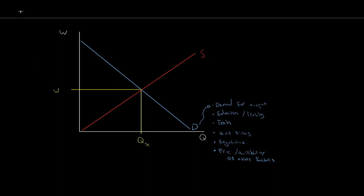That's it for demand — let's take a look at our supply. From the supply side, this is you and I. The first factor we can look at is the number of workers. If you're in a large city with lots of workers, that's a lot of supply — supply shifting to the right. You're in a smaller area with fewer laborers, a smaller pool of people to pull from — supply shifts to the left.